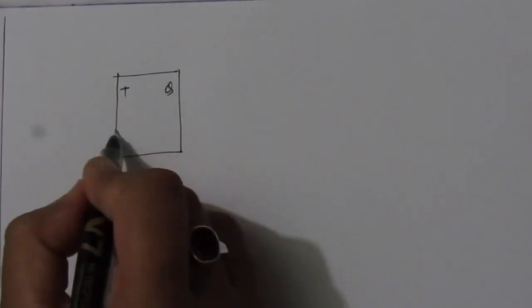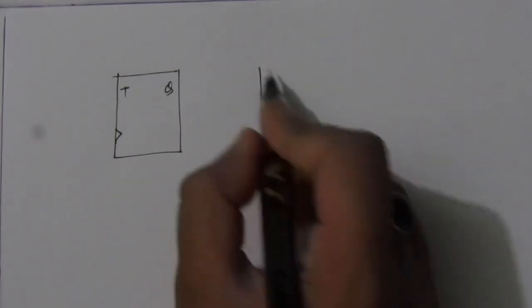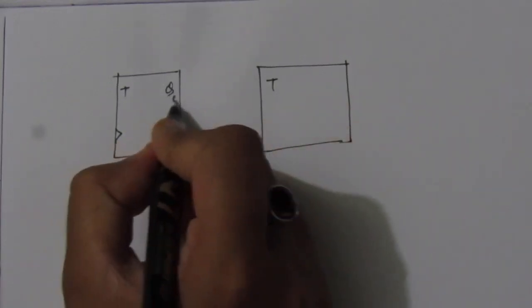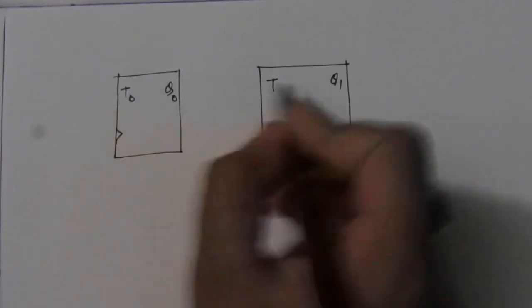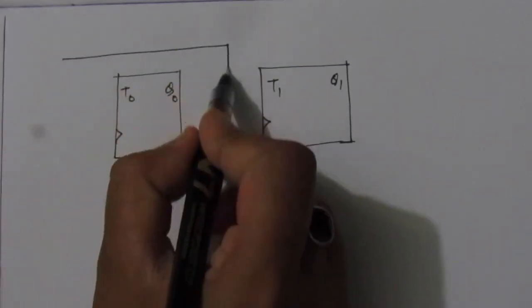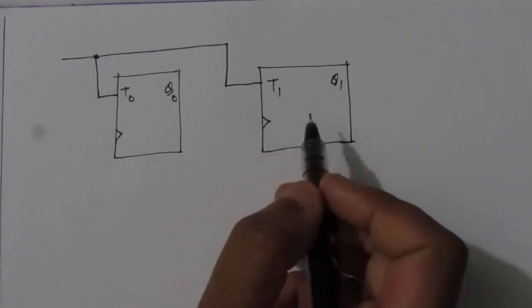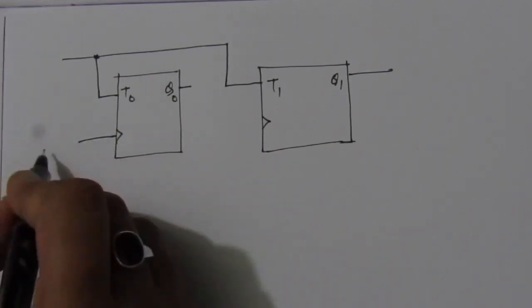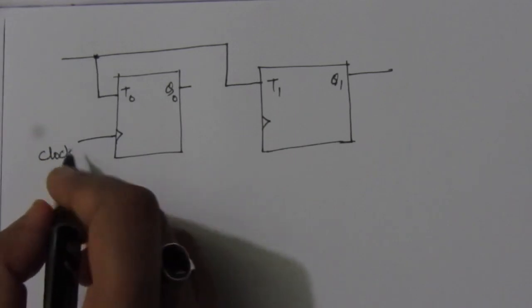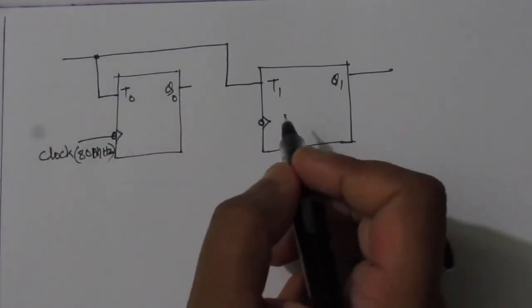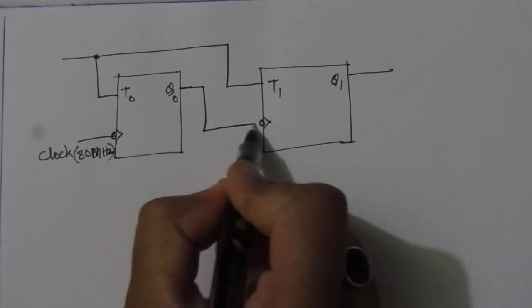The first T flip-flop has inputs T0, output Q0, and a clock input. The second T flip-flop has input T1, output Q1, and a clock input. We apply logic 1 to both T inputs. Whenever logic 1 is applied at the T input, the output will toggle on each clock edge. We give the 80 MHz clock signal to the first flip-flop, using negative-edge triggering, and connect the first stage output Q0 to the clock input of the second stage.